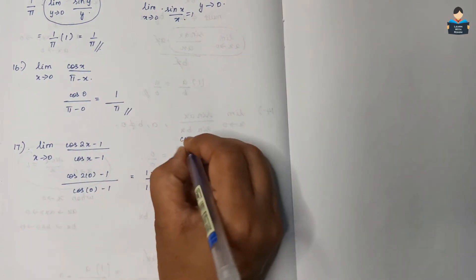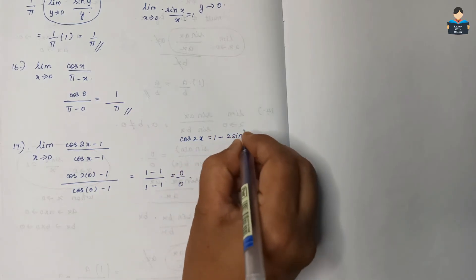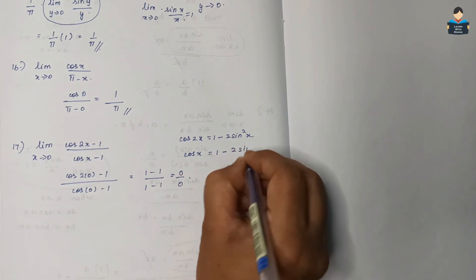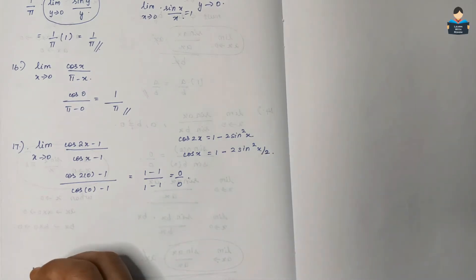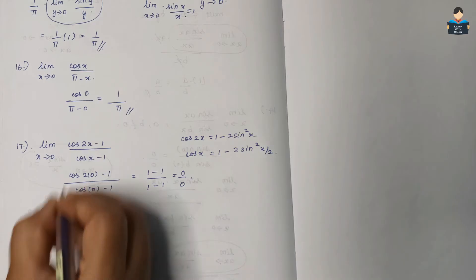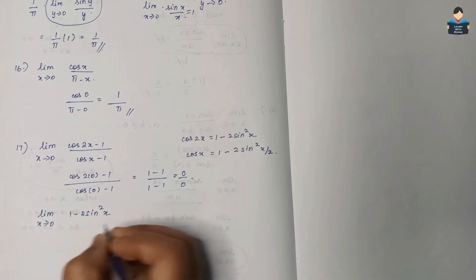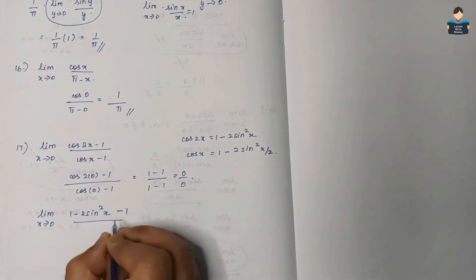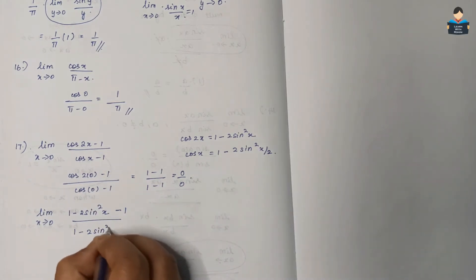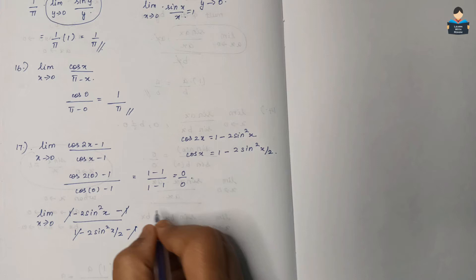We use the formulas: cos 2x = 1 − 2sin²x, and cos x = 1 − 2sin²(x/2). Substituting: numerator becomes (1 − 2sin²x − 1) = −2sin²x, and denominator becomes (1 − 2sin²(x/2) − 1) = −2sin²(x/2). The +1 and −1 cancel.